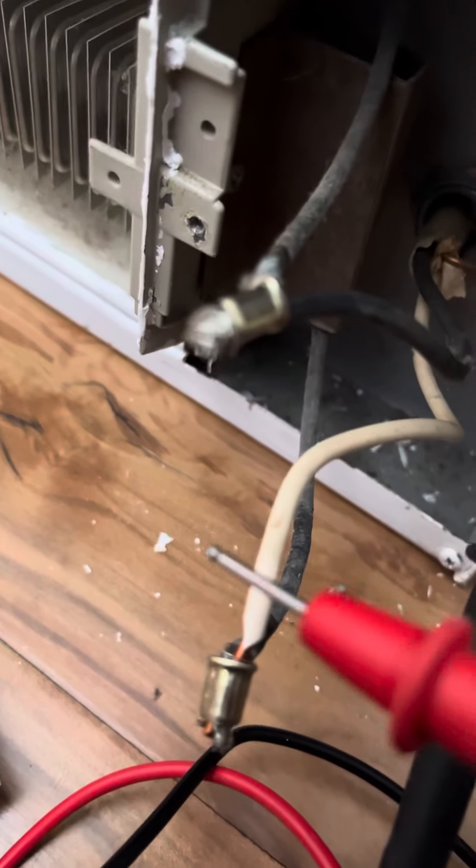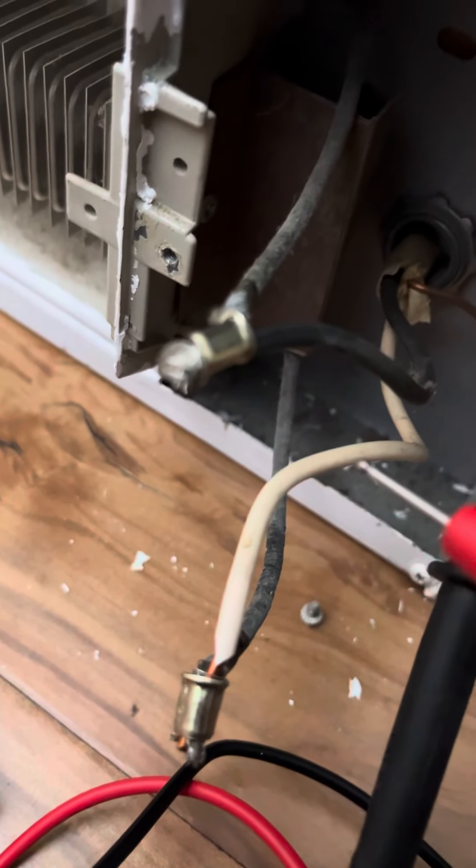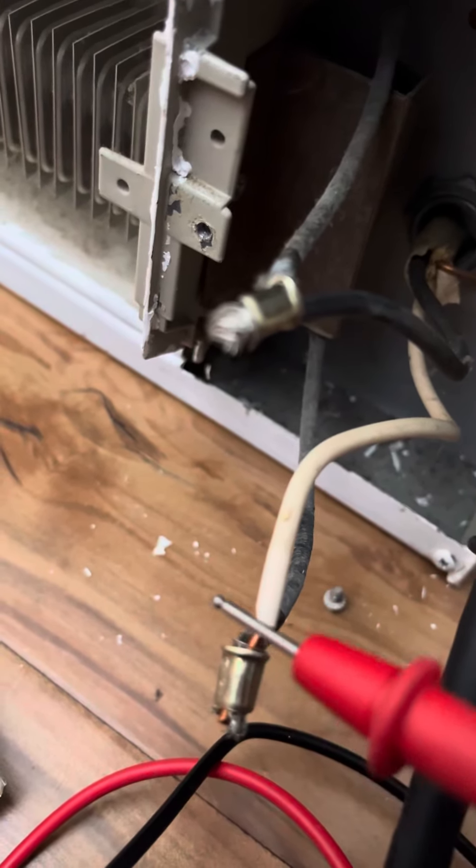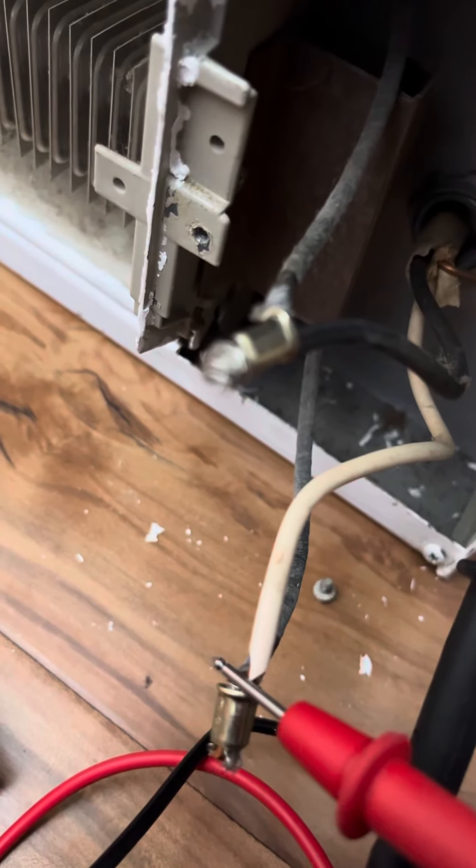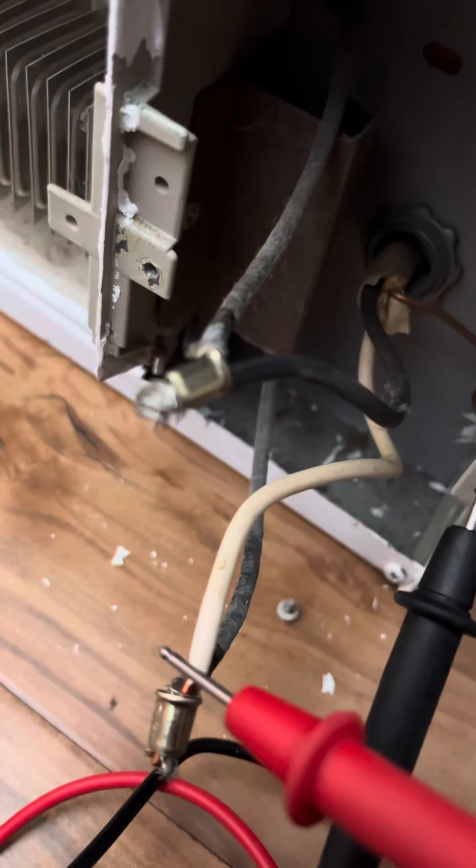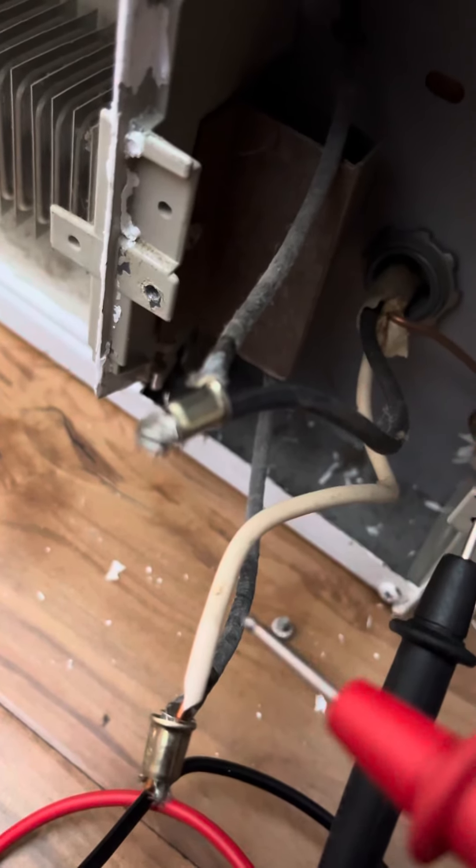Now this one - if it's a 240 volt circuit, this should also be 120. It's 0.2 volts, which tells me this is the neutral. Hot and neutral, which is a 120 volt circuit.